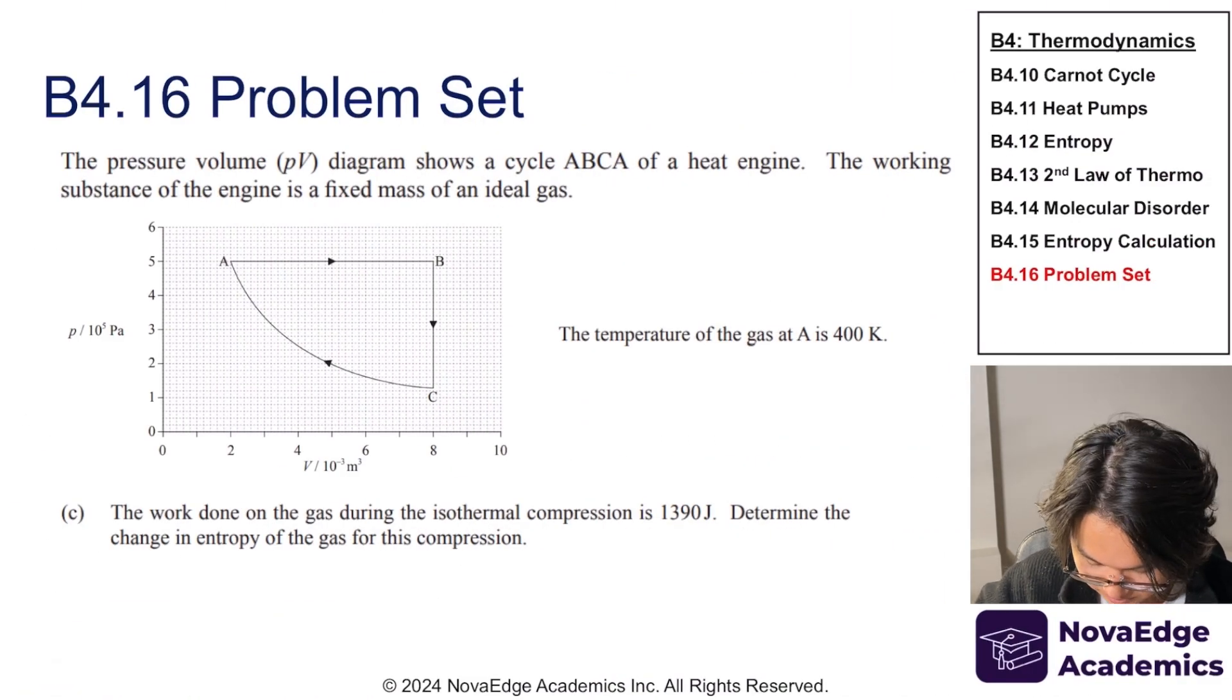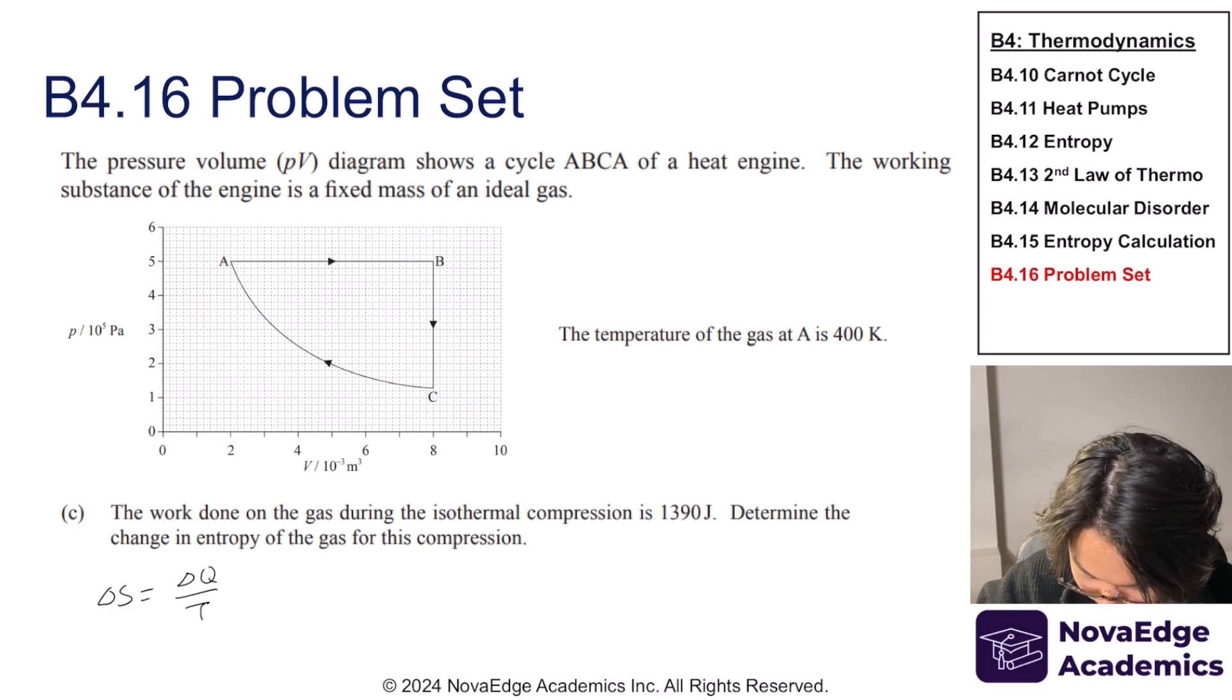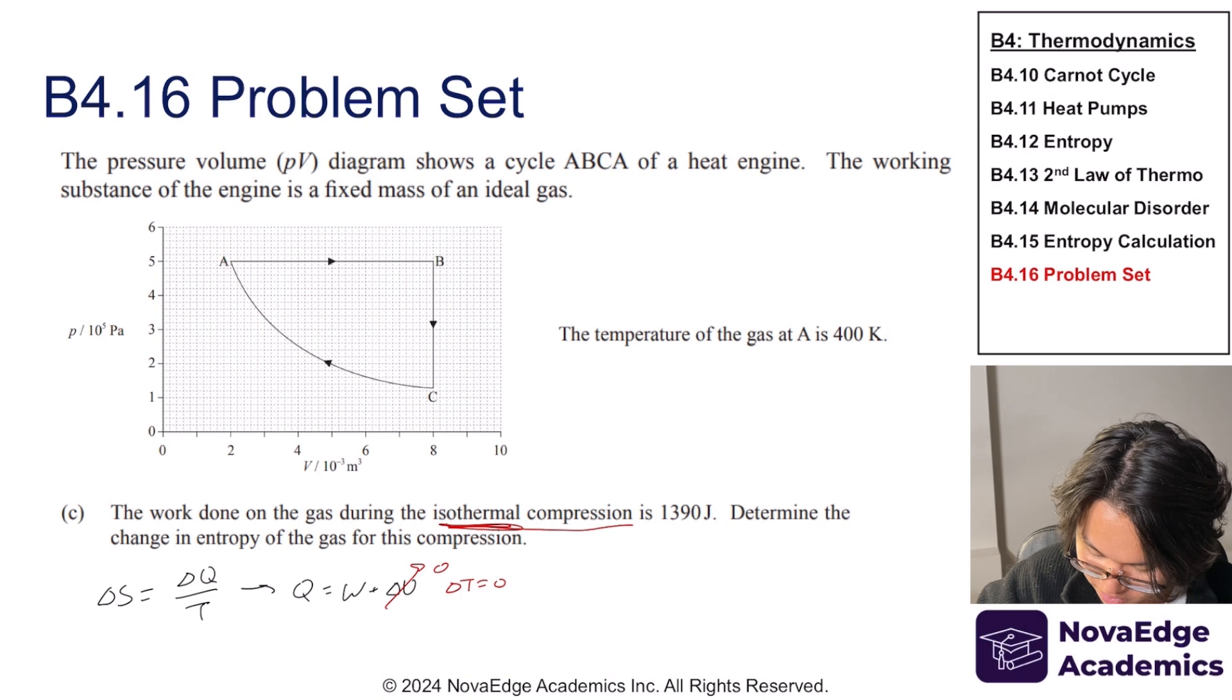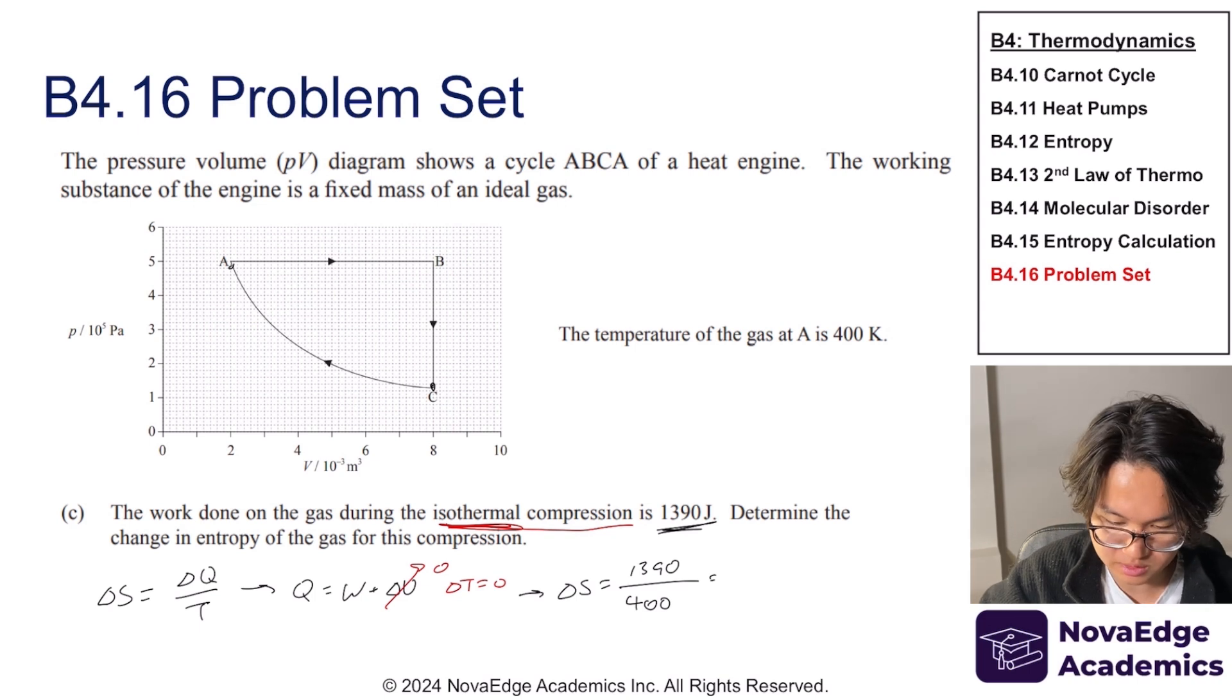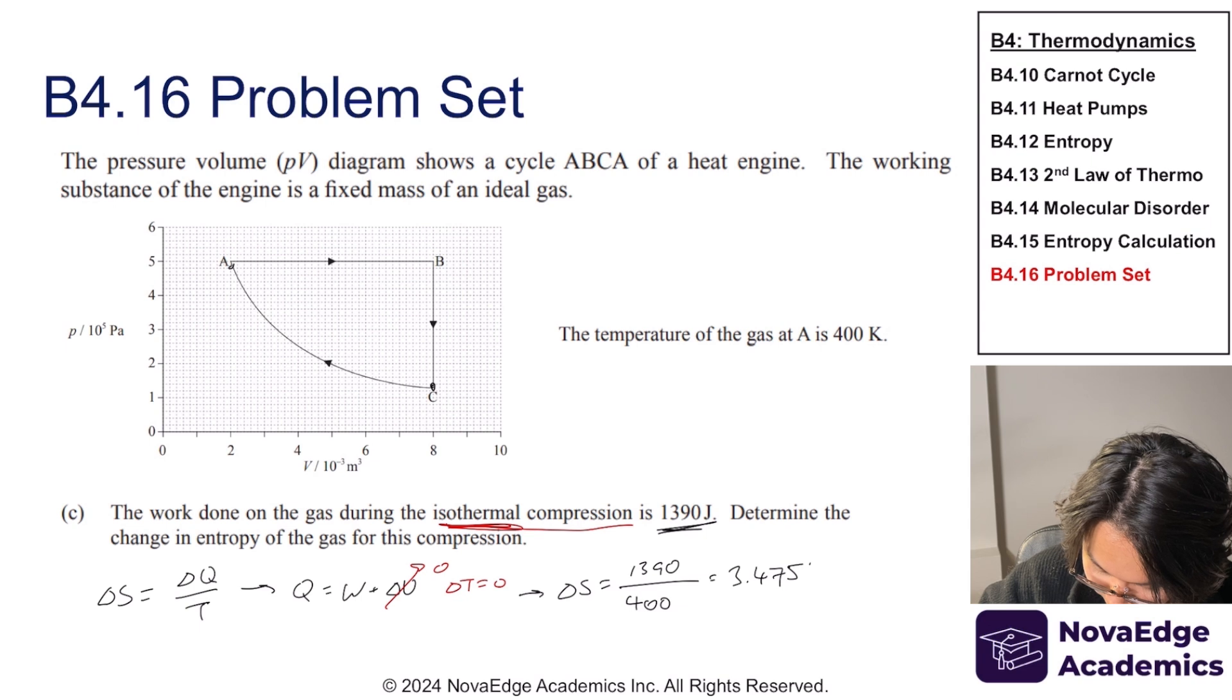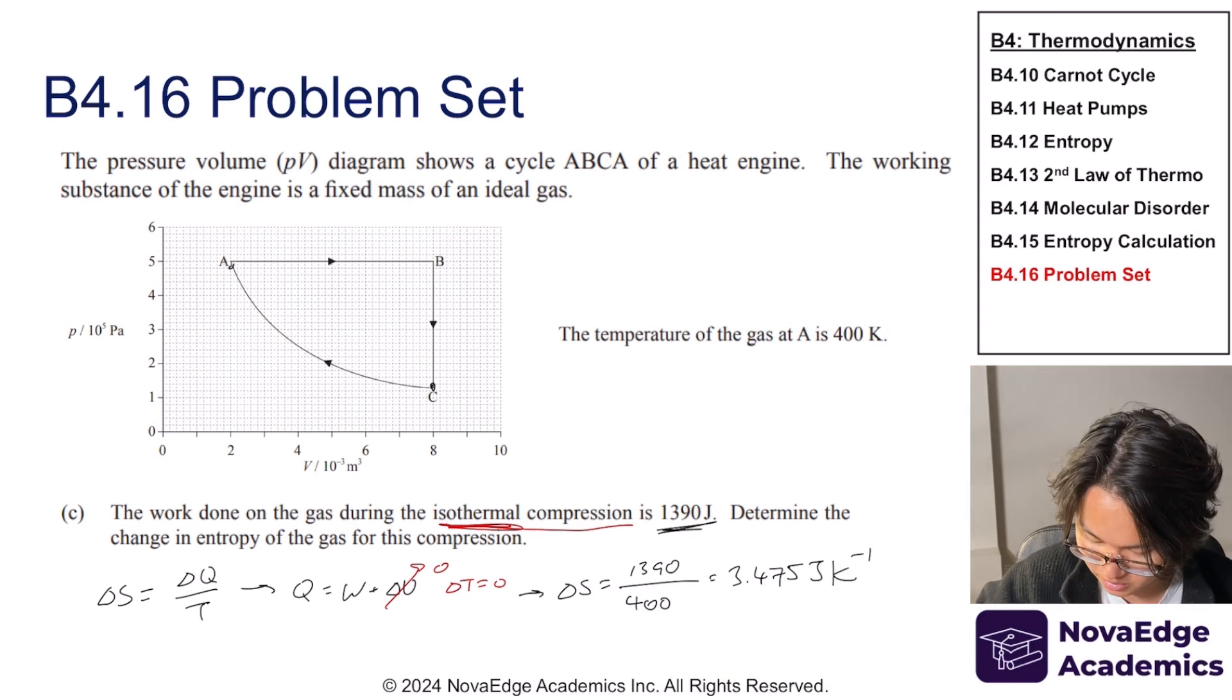So pause the video and give this one a try. Okay, so they tell us during this isothermal compression from C to A, the work done is 1,390 joules. So determine the change in entropy. We know the change in entropy is given by this formula. Well, delta Q is equal to work plus delta U. But we know delta U is actually zero because in an isothermal compression, delta T is zero. So that means delta U is also zero. So it's just W. So it's just 1,390. So entropy is equal to 1,390 joules divided by temperature. And we know our temperature is isothermal from C to A. Both of them are 400 Kelvin. That gives us 3.475 joules per Kelvin. That's the unit of entropy.